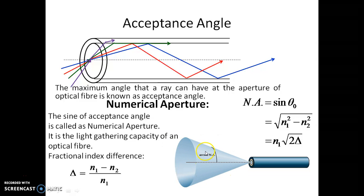The acceptance cone is the cone having full angle 2θ₀, and all the rays within this cone are accepted by the optical fiber for propagation.